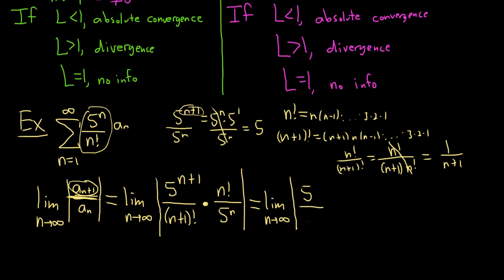So this is over n plus 1. We actually don't need the absolute value here because everything is positive. If you take this limit, you get 0 because as n approaches infinity, 5 over n plus 1 gets smaller and smaller. This is less than 1, so converges by the ratio test.